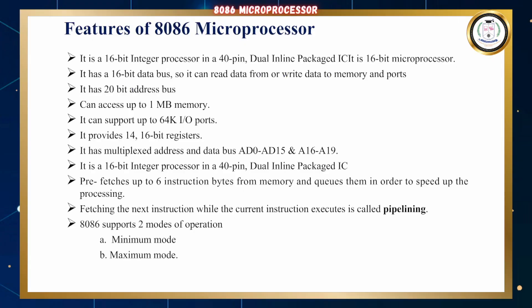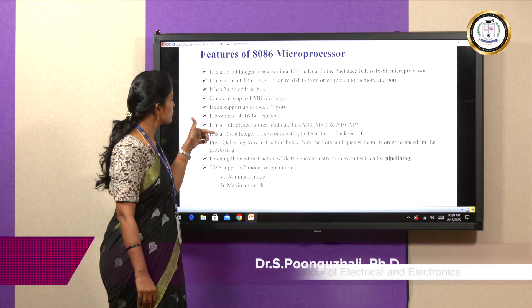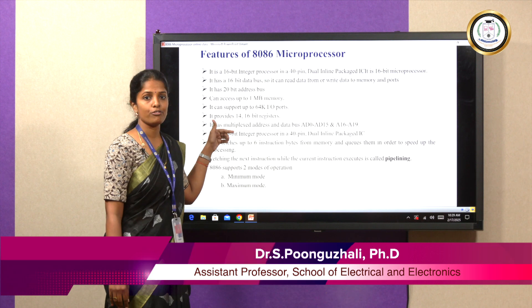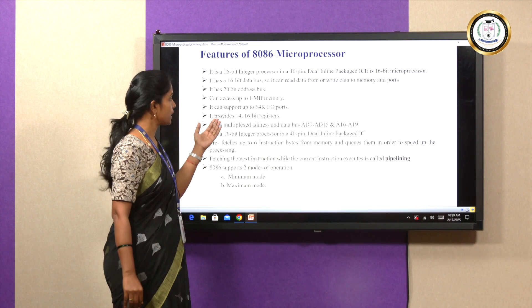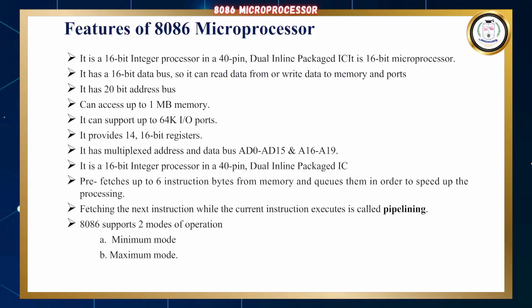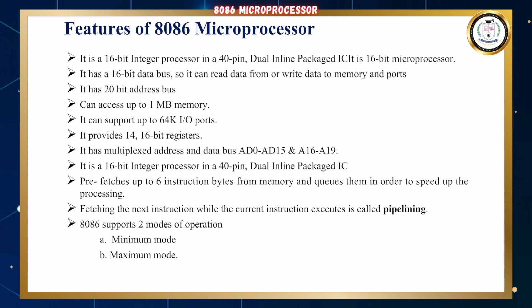The basic features of the 8086 microprocessor are: it is a 16-bit microprocessor with a 20-bit address bus, so it can process up to 1 megabyte of memory. It supports 64 KB of input-output ports, provides 14 16-bit registers, and has a multiplexed address and data bus.